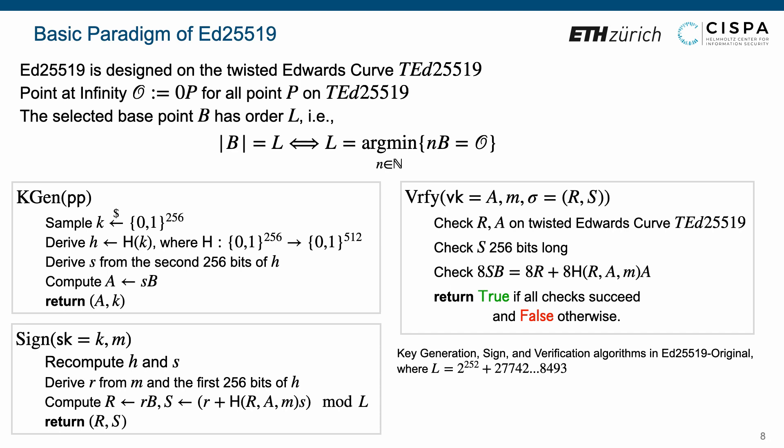Finally, it computes R equals r times B, and S equals r plus hash of R, A, M times S, modulus L, and outputs R and S as signature.